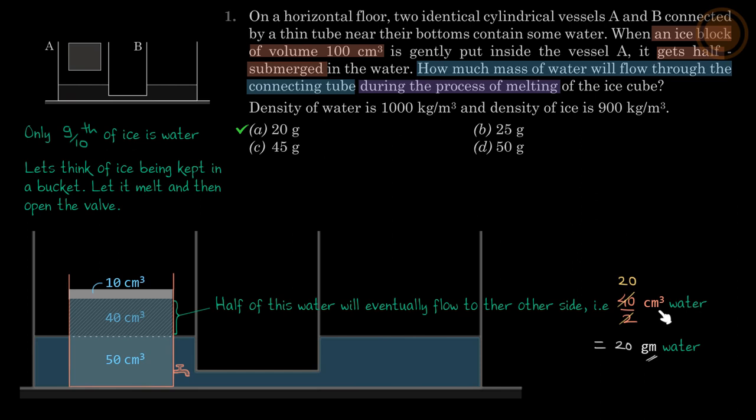So 1 cm³ is 1 gram of water, 20 cm³ is 20 grams. So the answer is A.